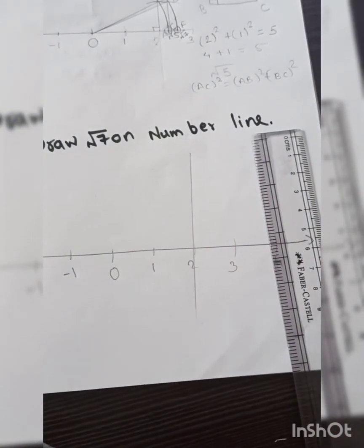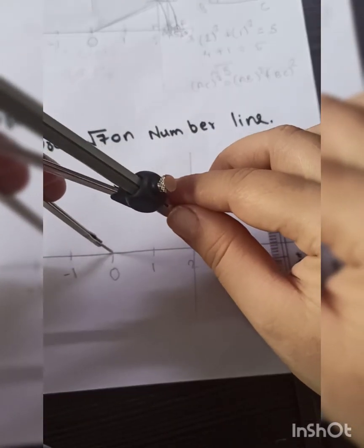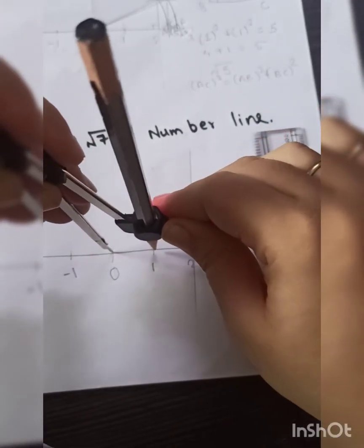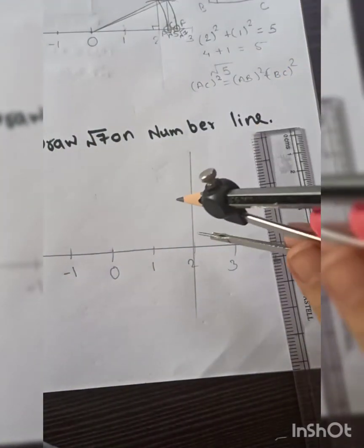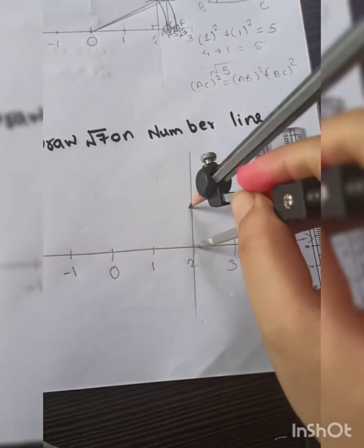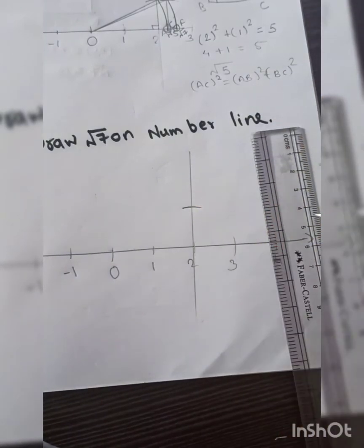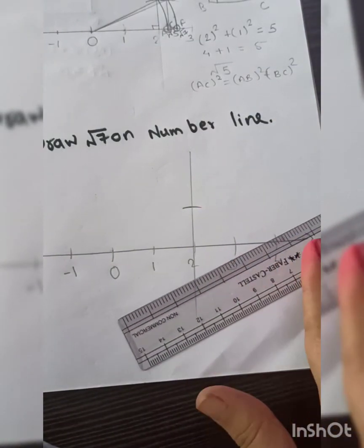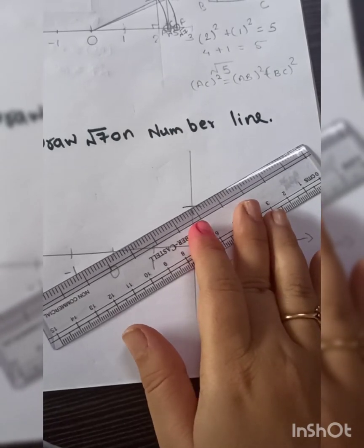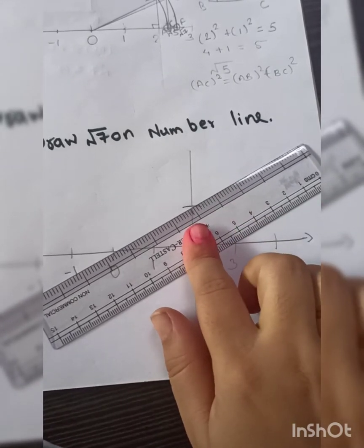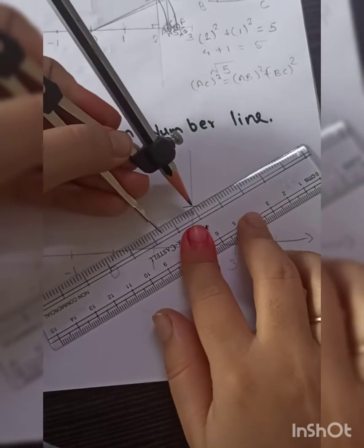Now what is the next step? We will take one unit distance - one unit means take the distance from 0 to 1. The same distance you are going to take. Now keep on point 2 and draw an arc. Now next step after this is you will join this from 0 to the point, like this. Join the lines.